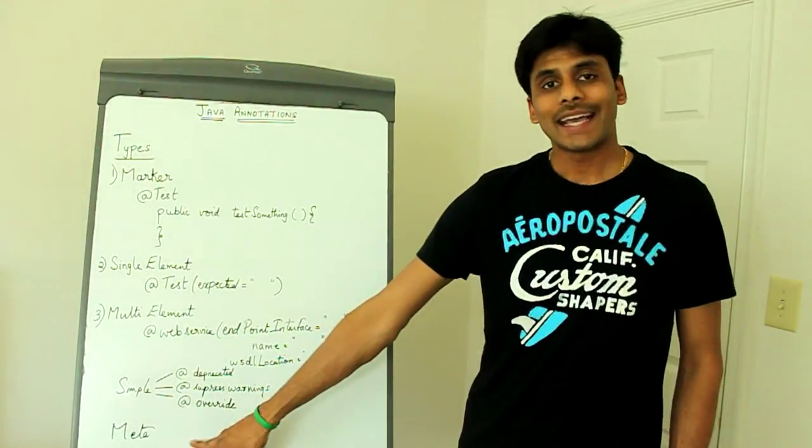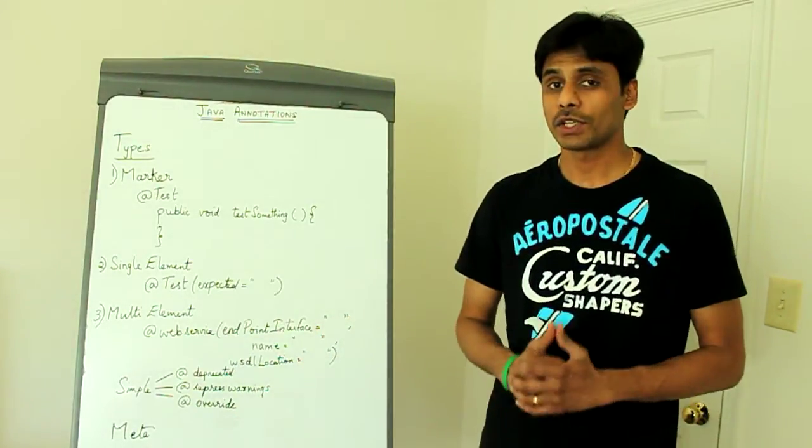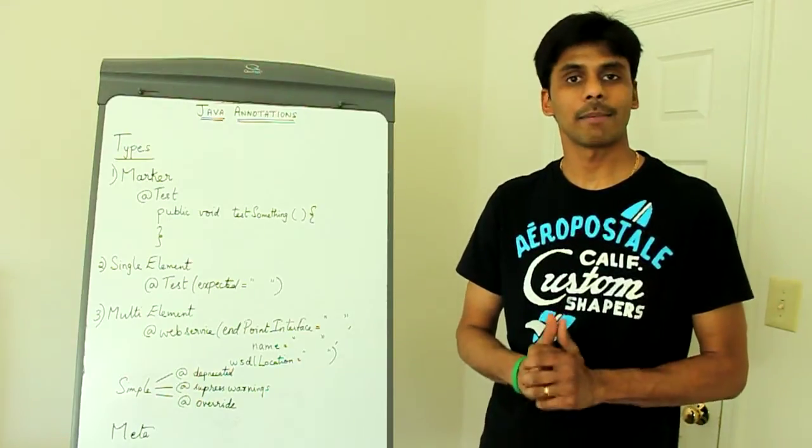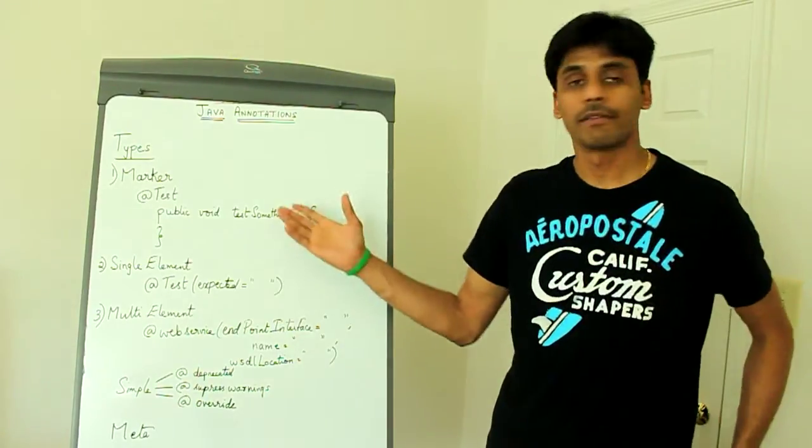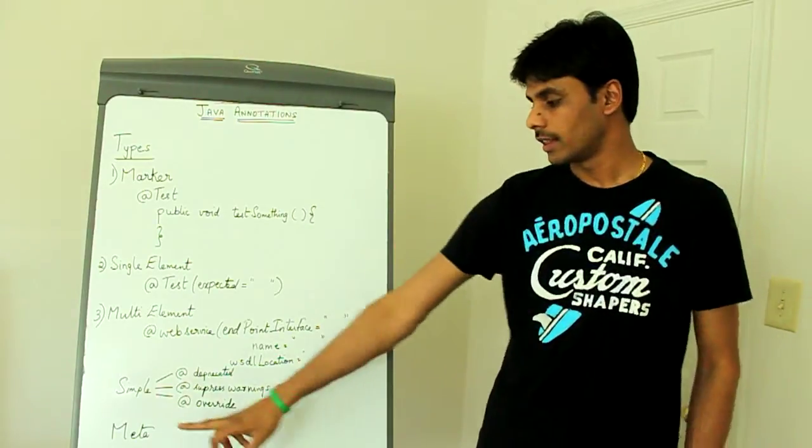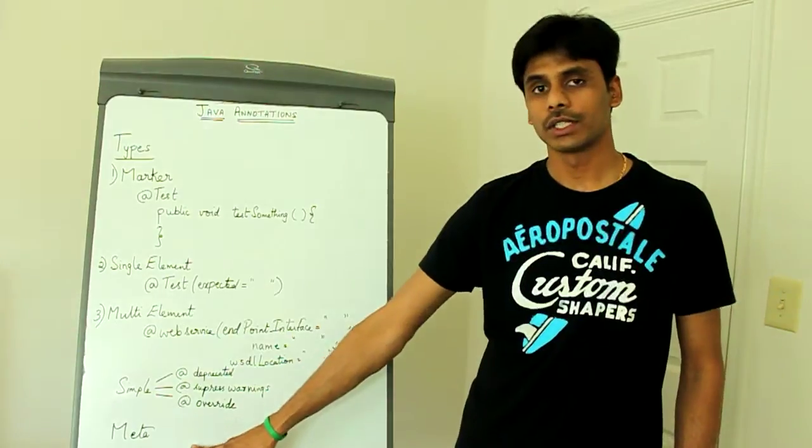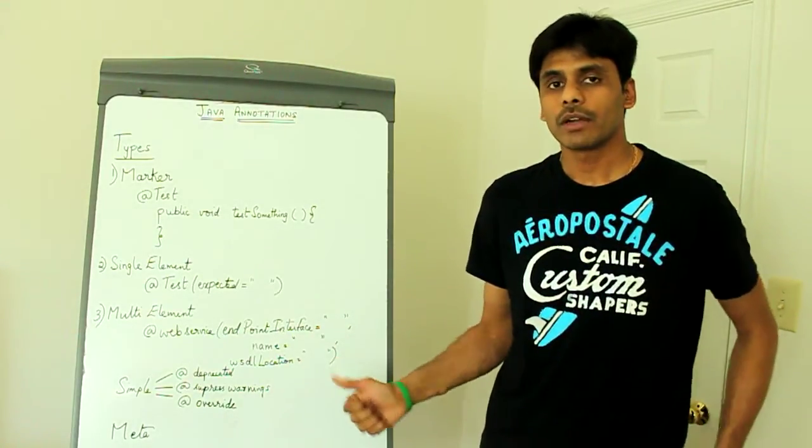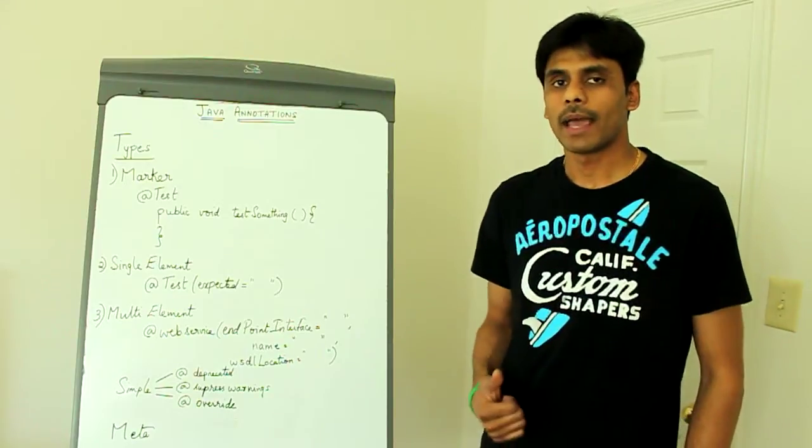Java also offers meta annotations, that is annotations of annotations, and these are used to come up with your own custom annotations. All these frameworks like JUnit and Spring, when they come up with their own annotations, they use the annotations under the meta annotations API and I will present them in the future when I show you how to create a custom annotation.